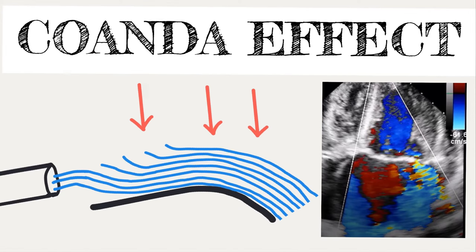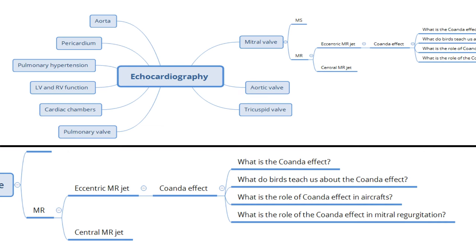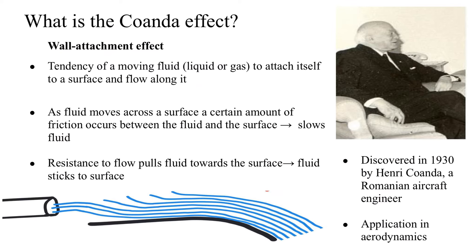Today I'll be talking about an effect most commonly seen during echocardiography called the Coanda effect, and it's specifically useful when we are trying to assess eccentric mitral regurgitation jets. When you look at it overall, it's a pretty small aspect of a larger question of evaluation of mitral regurgitation jets on an echocardiogram. However, it is still very interesting and has a lot of applications. So let us begin by asking: what is this Coanda effect?